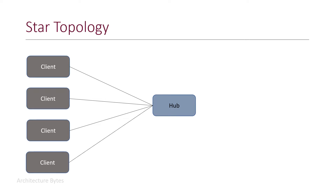This is the star topology with a central hub. Clients do not talk to each other directly. Instead, they send and receive messages to and from a central hub.